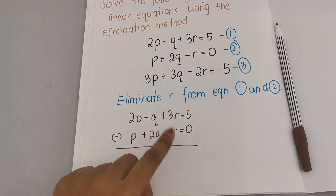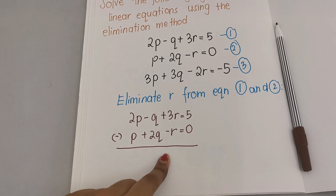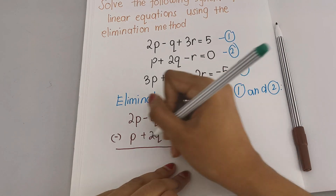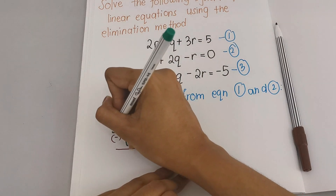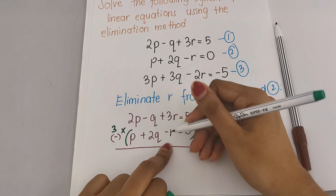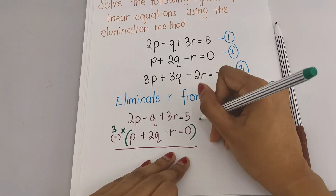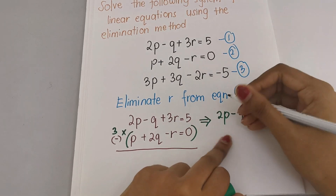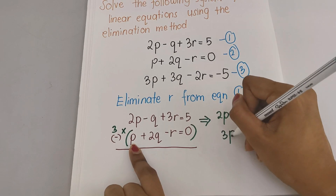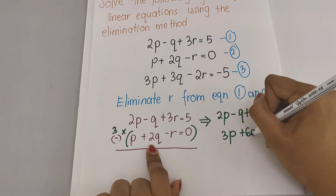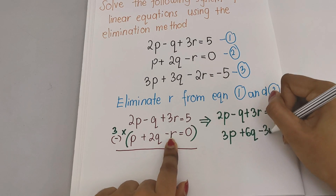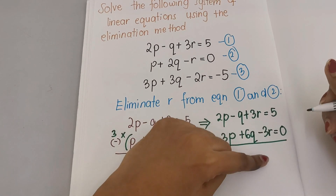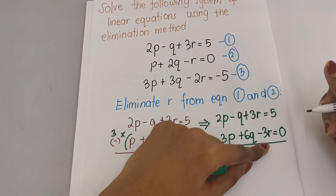When I eliminate r, can 3r minus negative r give me 0? No. So I need to make sure that when I subtract I get r equal to 0. I need to multiply equation 2 by 3. So: 3 times p is 3p, 3 times 2q is 6q, 3 times negative r is minus 3r, and 3 times 0 is 0. Now 3r minus 3r gives 0.